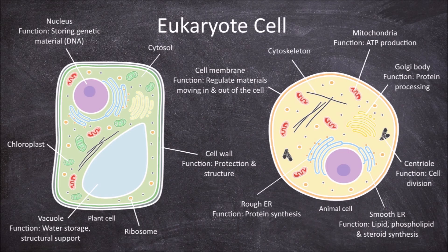The cytoskeleton of the eukaryotic cell consists of microtubules, intermediate filaments and microfilaments. Within the cytoplasm there are also other smaller organelles such as peroxisomes and lysosomes.